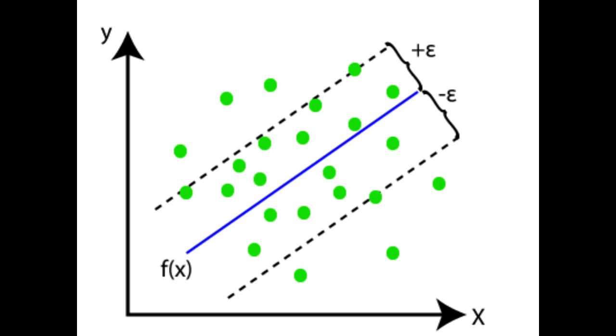Boundary line, boundary lines are the two lines apart from hyperplane which creates a margin for data points. Support vectors, support vectors are the data points which are nearest to the hyperplane and opposite class.